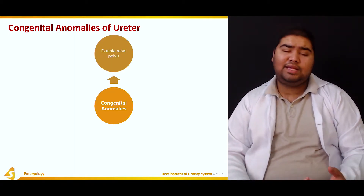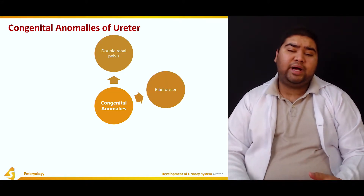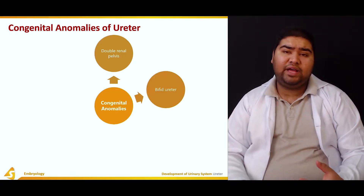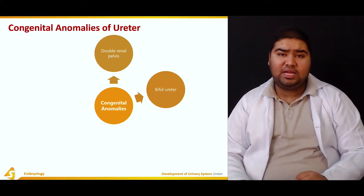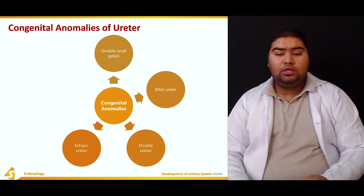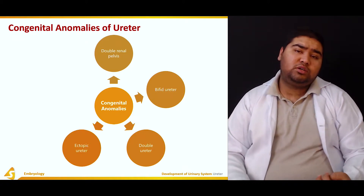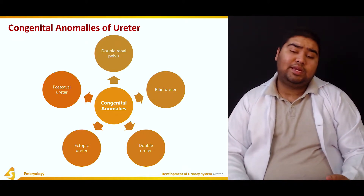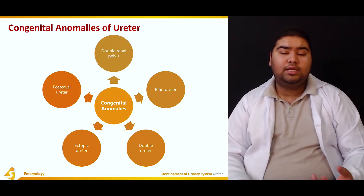We can have a double renal pelvis, where the upper portion of the ureter might be bifid. We can have a bifid ureter — that is, two complete ureters draining the kidney. We can have double ureters, an ectopic ureter which does not open in its right place, and we can have a postcaval ureter.